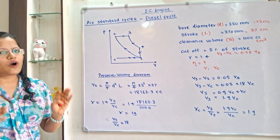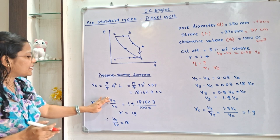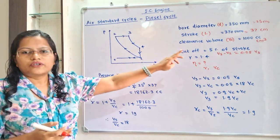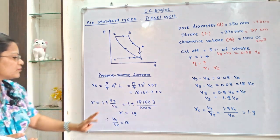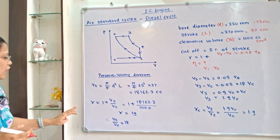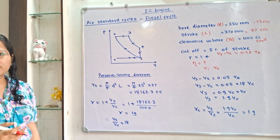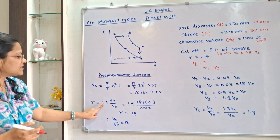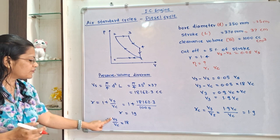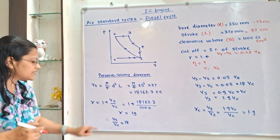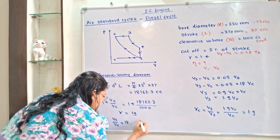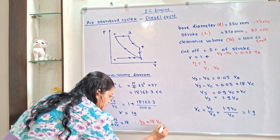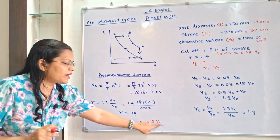Compression ratio R equals 1 plus Vs divided by Vc. Since Vs and Vc have the same units (centimetre cube), we substitute the values and get R equal to 19. From R = 1 + Vs/Vc, substituting R = 19 gives Vs/Vc = 18, so Vs equals 18 Vc. This is the relation between swept volume and clearance volume.